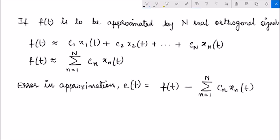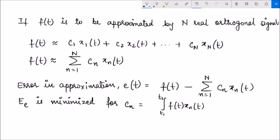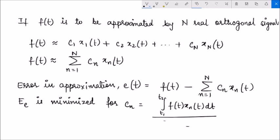We have already discussed that the energy of this error signal is minimized when cn equals the integration from t1 to t2 of f(t)·xn(t) dt, divided by the integration of xn(t) squared dt from t1 to t2. This denominator is nothing but the energy of xn, which we can simply write as En.